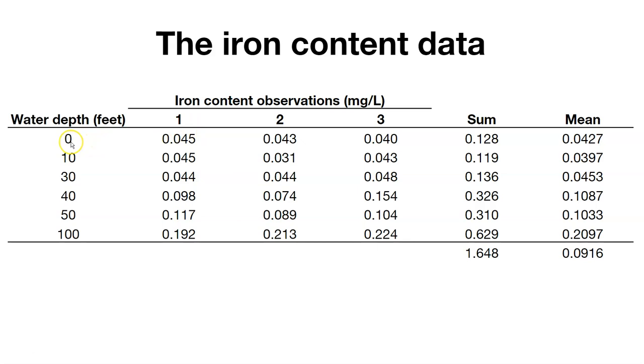For example, at zero feet, or at the surface of the water, we collected different iron content levels. And so it didn't vary very much. It's from 0.045, 0.043, to 0.04.